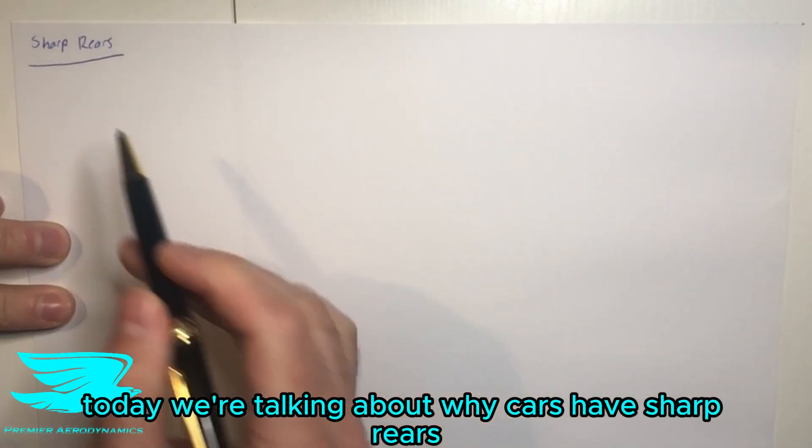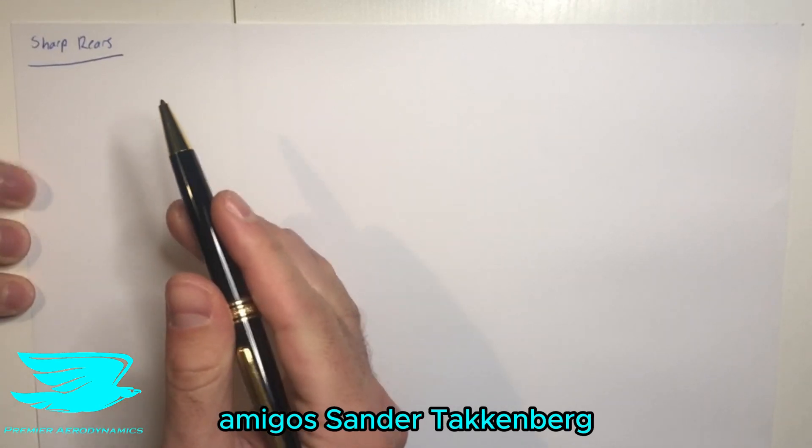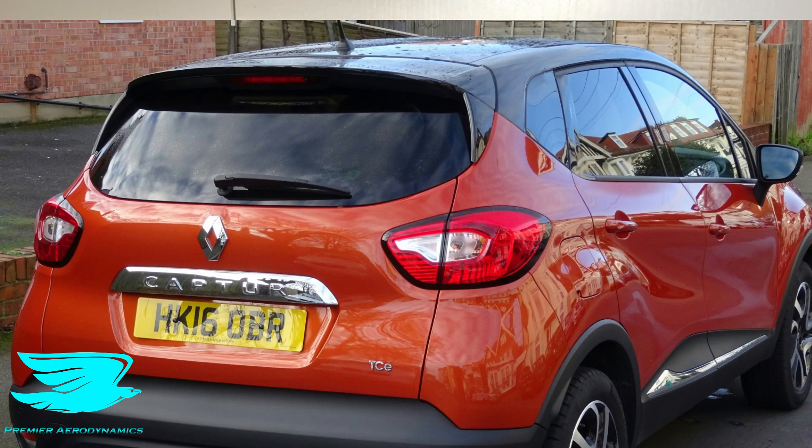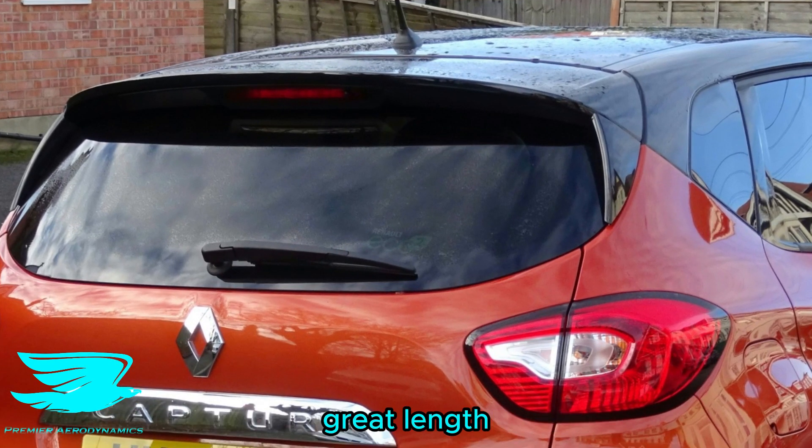What is up amigos, today we're talking about why cars have sharp rears. This actually comes at the request of one of your amigos, Sand and Tucumberdy, who was talking about if you look at, for example, this car here, you see at the back it's quite sharp. They've actually gone to quite a long length to make these sharp edges.